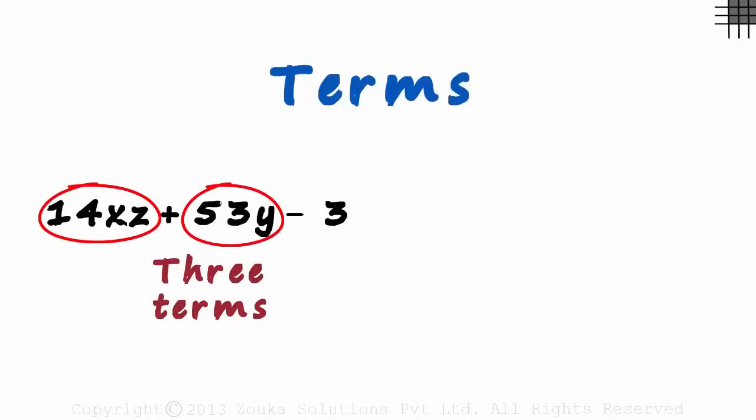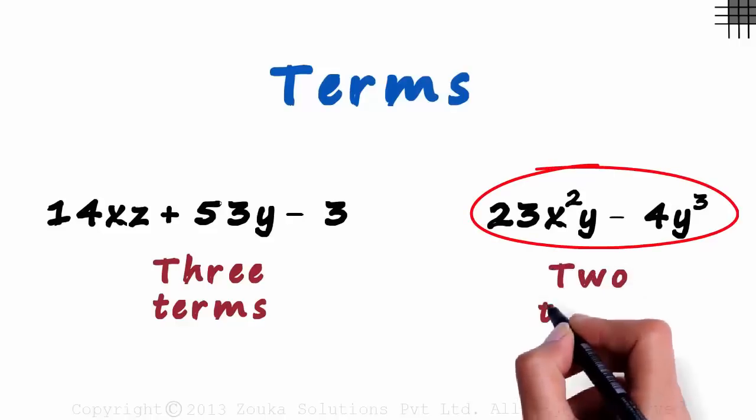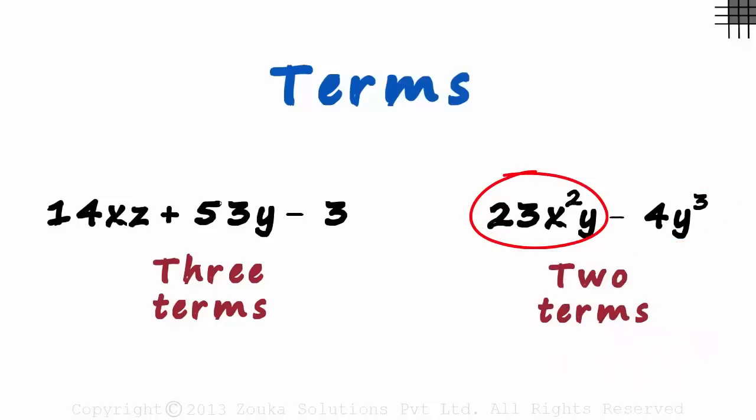14xz, 53y and 3. The second expression is 23x squared y minus 4y cubed. This expression has just two terms, 23x squared y and 4y cubed.